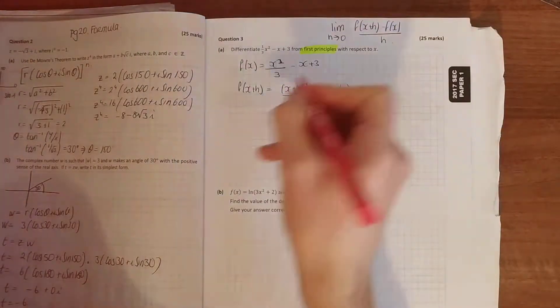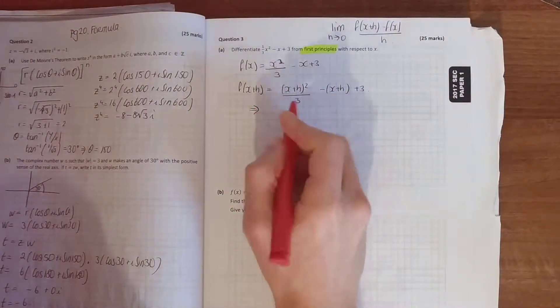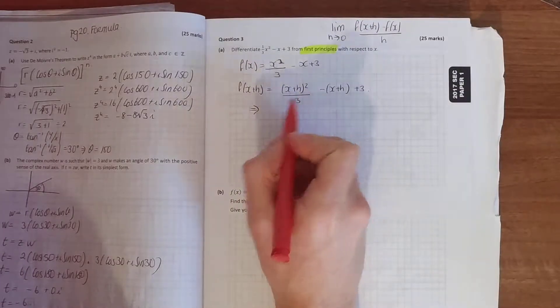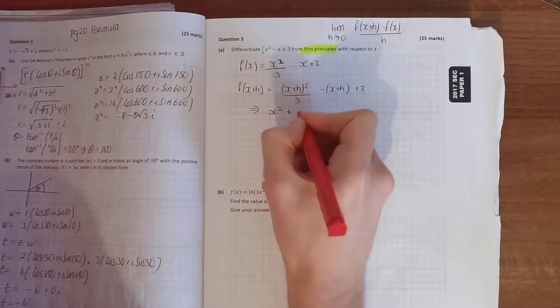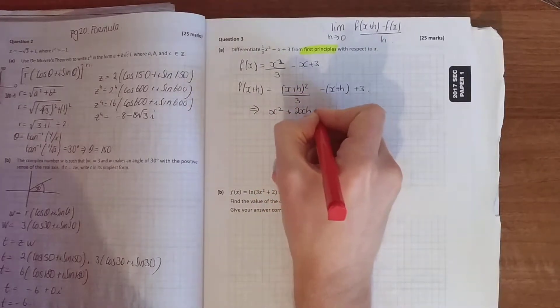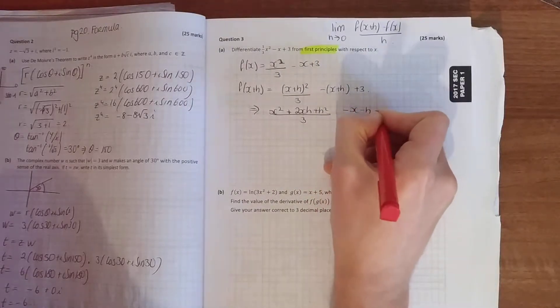If you tidy that up a wee bit, what you get is, write out that bracket twice if you like, (x + h) times (x + h). Don't be making any silly mistakes there. Square the first, multiply the two together, xh and double it. Square the last. Minus x minus h plus 3.